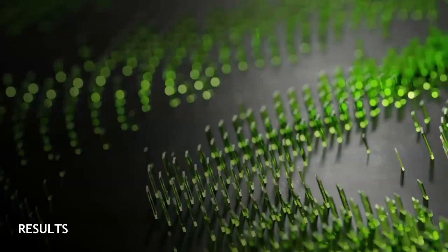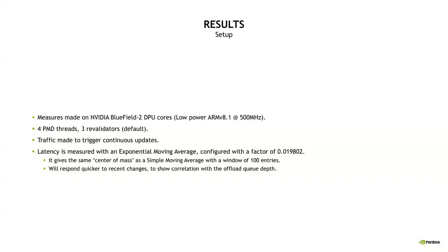Let's look at the results from this optimization. I use the Bluefield2 SmartNIC, which has low-power ARM cores used to run OVS, helped by the acceleration provided by the hardware classifier. The offload process is CPU-bound, and also impacted by cache size and memory bandwidth. As such, it is important to consider smaller and slower CPUs for the OVS datapath architecture. Four PMD threads are used and revalidators are left with the default configuration, which creates three revalidators in this context. The traffic being sent varies in a way that triggers many datapath classifier updates and creates continuous updates to the hardware classifier. The latency uses an exponential moving average to give more weight to the measured latency in the latest offload updates.